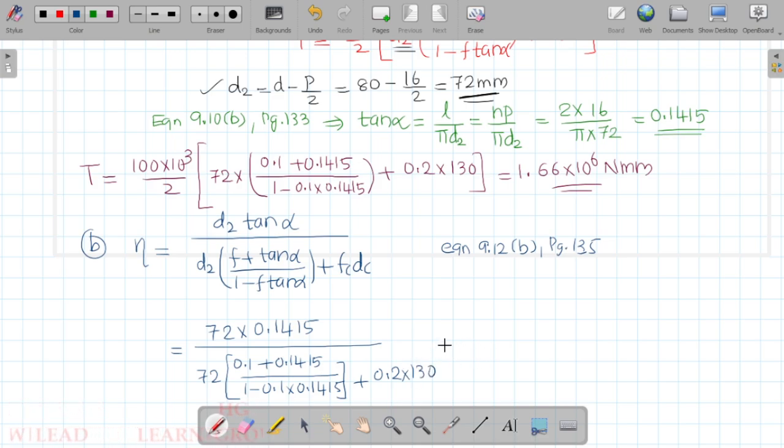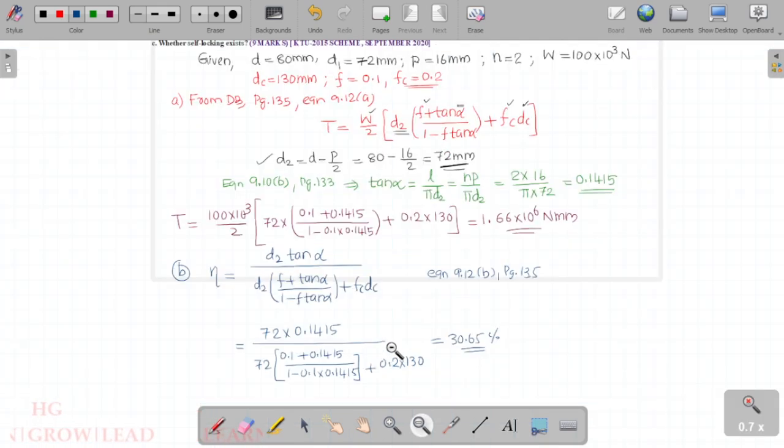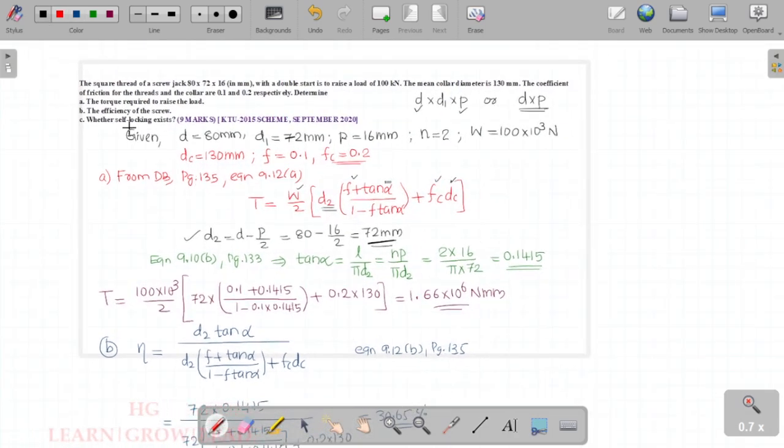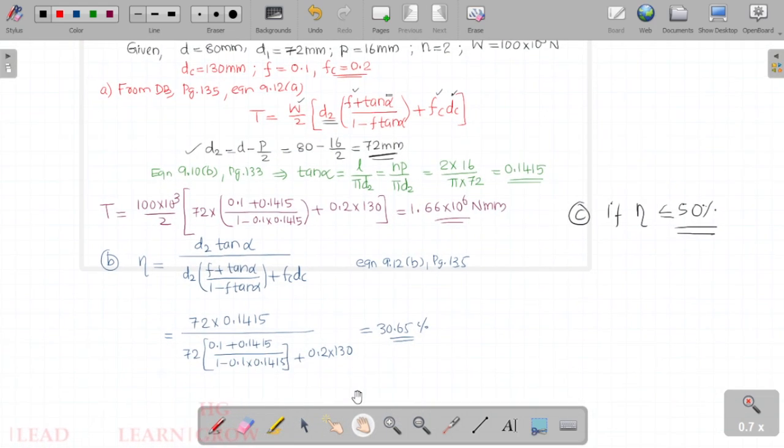This value comes around 30.65 percentage. If efficiency is less than or equal to 50 percentage, it implies self-locking. Efficiency equals 30.65 percentage, therefore it is self-locking.